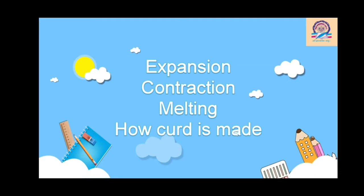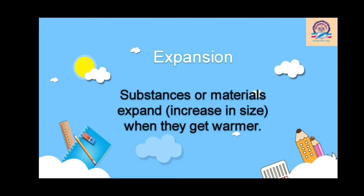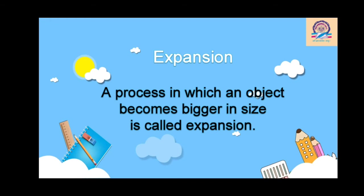All these processes are nothing but ways to bring about changes. These processes are very simple. Let's start with expansion and contraction. So what is expansion? As the name suggests, expansion is nothing but the process of expanding. When a substance or material expands, it increases in size when it gets warmer or when it gets heated. In simple words, expansion is a process in which an object becomes bigger in size.